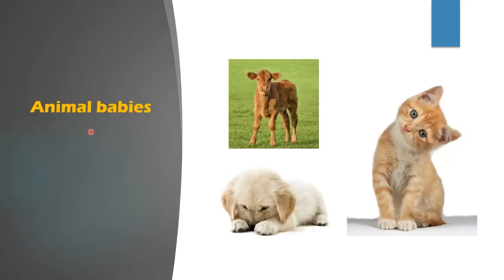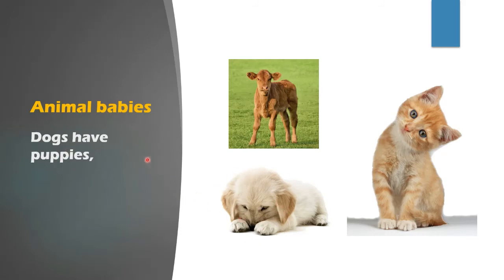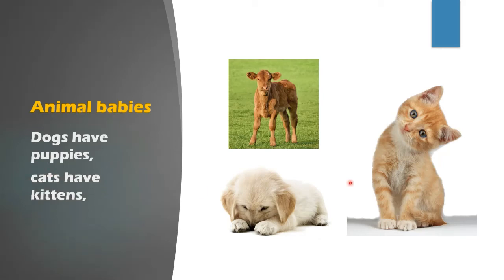Let's study about a few baby animals. Dogs have puppies, and puppies look very cute. Cats have kittens, and cows give birth to calves.